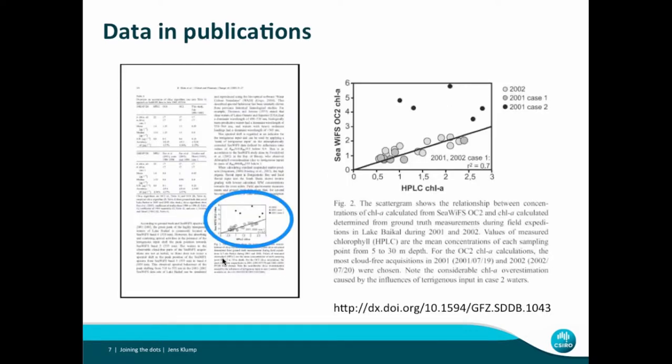The original idea was that data is traditionally published in papers. On the left-hand side is a typical journal page — you have some tabulated data, but the really interesting part is the illustration in the right-hand column, which some people call a buckshot scattergram with dots and disks. It nicely illustrates the main idea of the paper — in this case, calculated chlorophyll versus measured chlorophyll in Lake Baikal in Siberia. But that's about where it stops; you cannot use it any further, it just illustrates the thought.